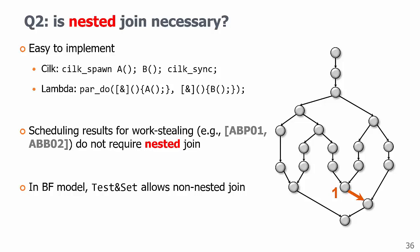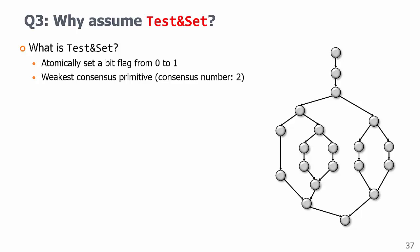And the last question, why test and set? Recall that the test and set is the weakest consensus primitive. In a join, two threads need to reach consensus, so it requires at least test and set.